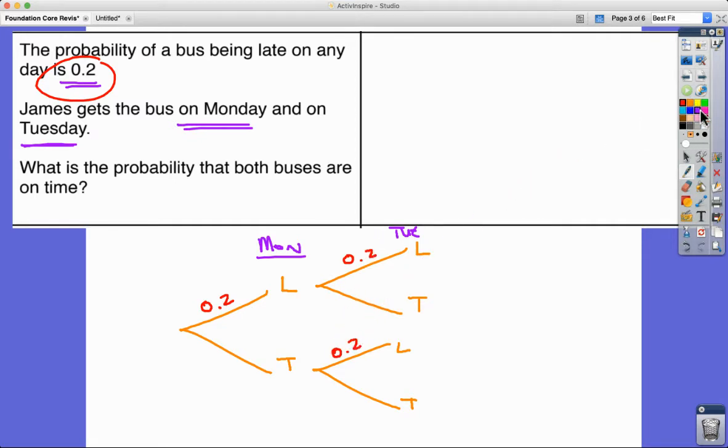It says that the probability on any day is 0.2 of being late, so 0.2 is our probability of being late. If our probability of being late is 0.2 or 20%, what's the chance that we're on time? Well that's got to be 1 subtract 0.2, or there's an 80% chance or 0.8 chance we're on time.